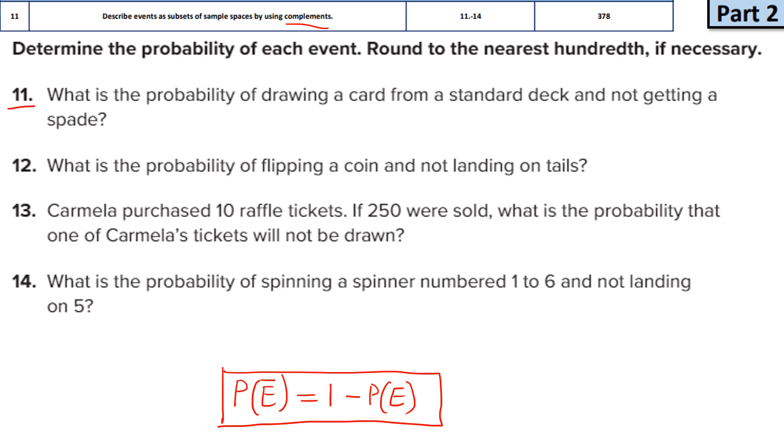So question 11, what is the probability of drawing a card from a standard deck and not getting a spade? So not getting a spade, the word not here, the words will not be drawn and not landing, these words tell you that these are the questions on complement. Whenever you see these keywords, remember you have to use this formula. Please learn this formula so that you can use it correctly for these questions.